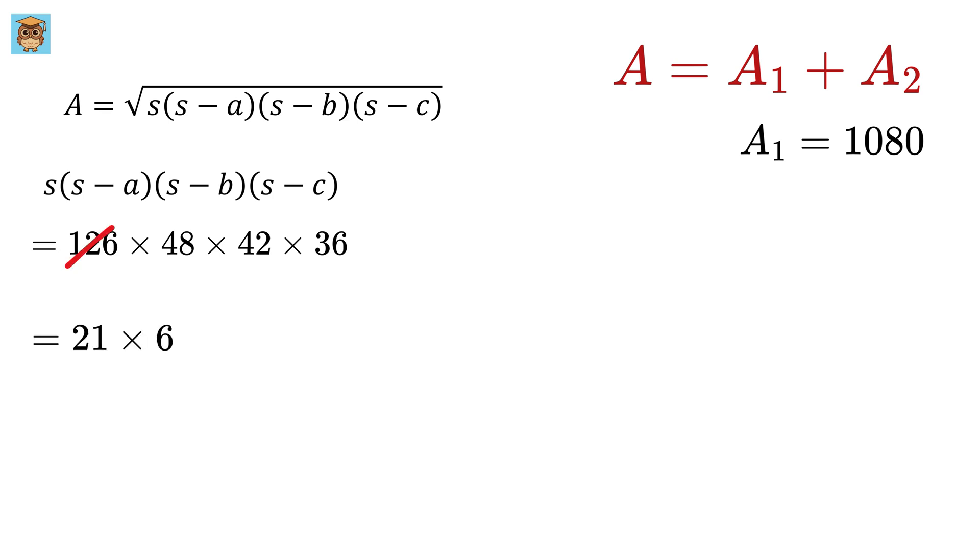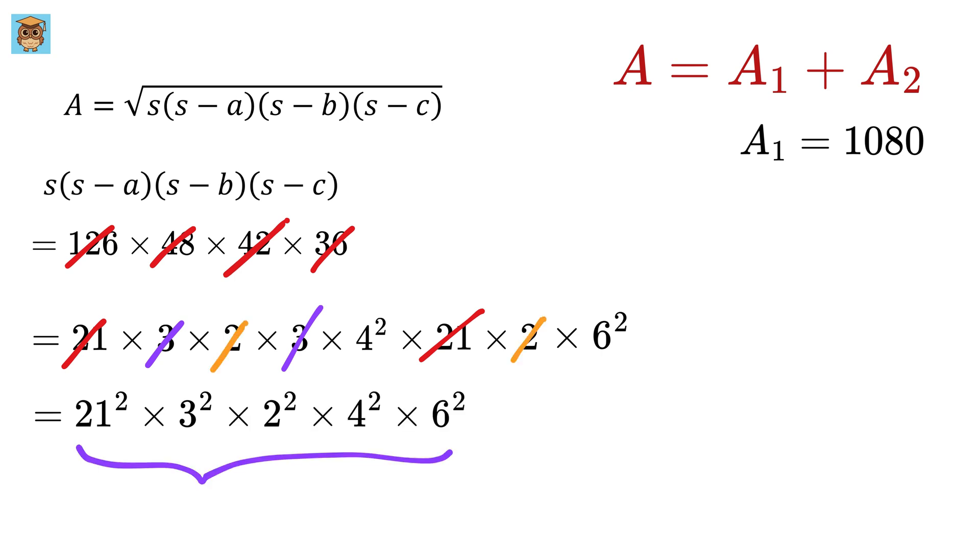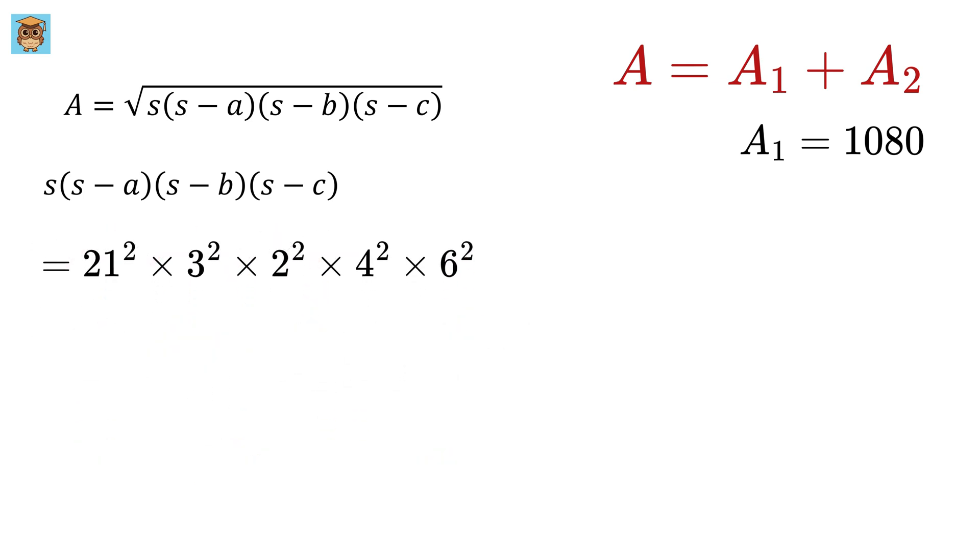We can rewrite 126 as 21 times 6, and 6 can be written as 3 times 2. Now 48 can be written as 3 times 16, and 16 can be written as 4 squared. Then 42 can be written as 21 times 2, and this 36 can be written as 6 squared. So look here, these two will become 21 squared, then these two will become 3 squared, then these two will become 2 squared. So we have a perfect square here. It will be 21 times 3 times 2 times 4 times 6 whole squared, or 3024 whole squared. Thus the area will be the square root of it, or 3024 square units.